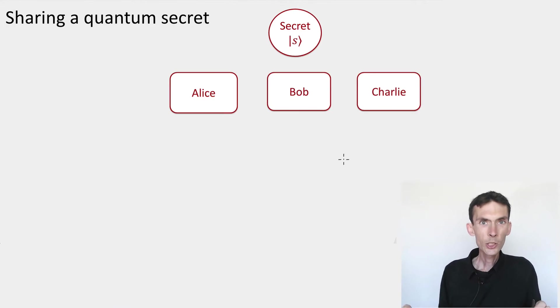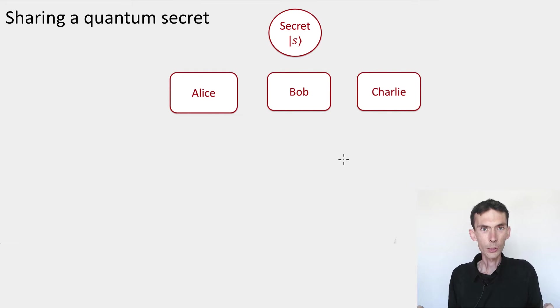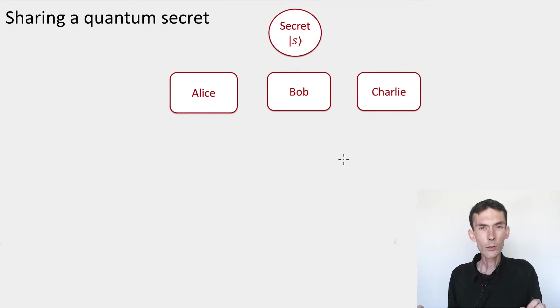We've seen how to share a classical secret using a quantum state. Now let's see how we could share a quantum secret using quantum states. It's going to be a little bit challenging, and in particular, we're going to need to use three different parties among which to share the secret. I'll tell you a little bit later why we needed three — we couldn't do it for two, and you can think about it already.